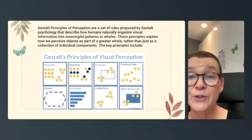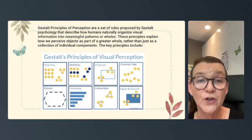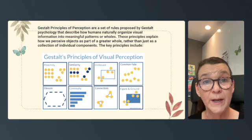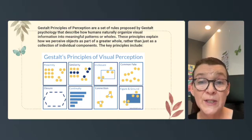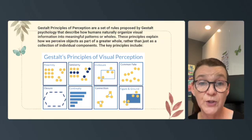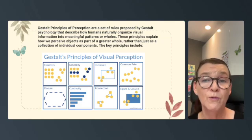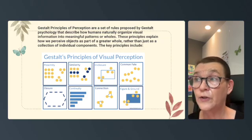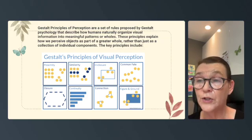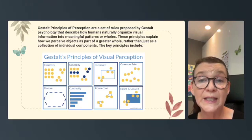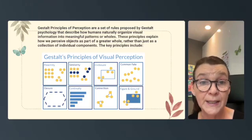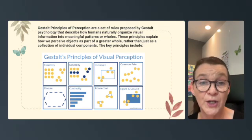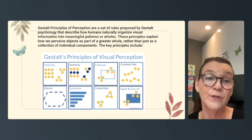Gestalt principles of perception are a set of rules proposed by Gestalt psychology. They describe how humans naturally organize visual information into meaningful patterns or wholes. These principles explain how we perceive objects as part of a greater whole, rather than just a collection of individual components. The key principles include: closure — filling in gaps to create a complete whole object; and figure and ground — distinguishing an object, the figure, from its background.